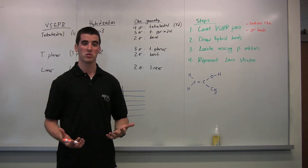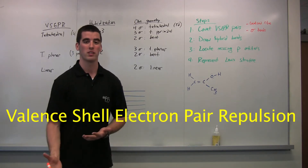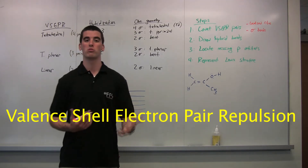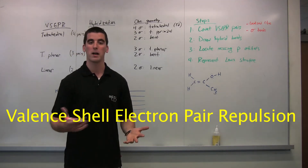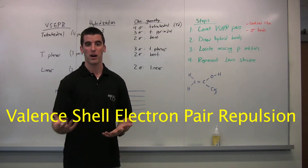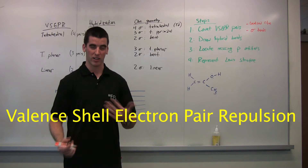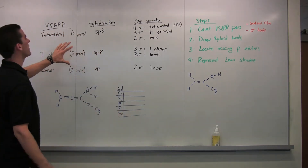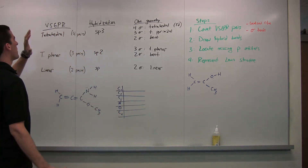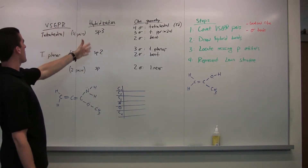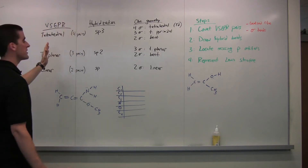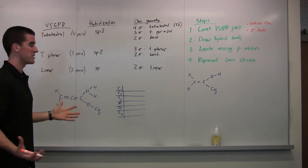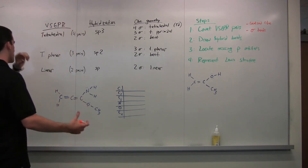VSEPR stands for valence shell electron pair repulsion, and you can use VSEPR to predict how to draw molecules based on electron repulsion. I have this chart written out here that links hybridization to VSEPR, which is an electronic geometry way to visualize the atoms of a molecule.